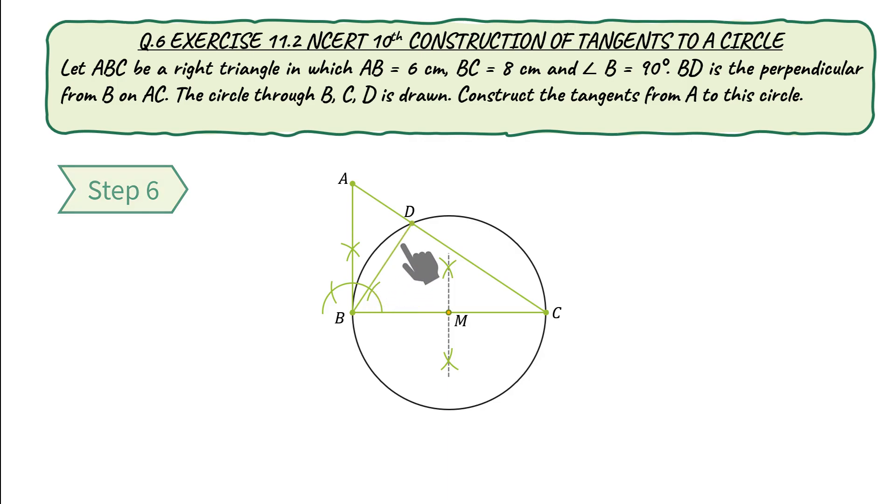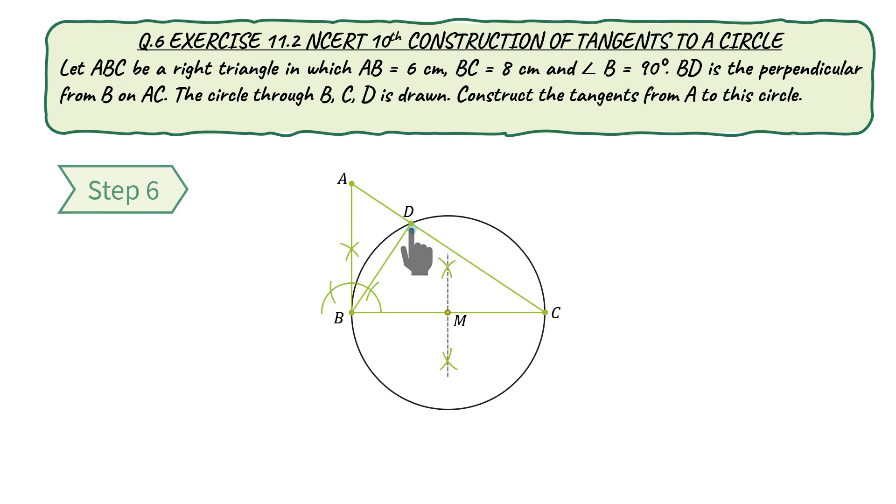Step 6. Draw a line segment BD. Please note that measure of angle BDC is 90 degrees, because the angle subtended at the circumference in a semicircle is a right angle.